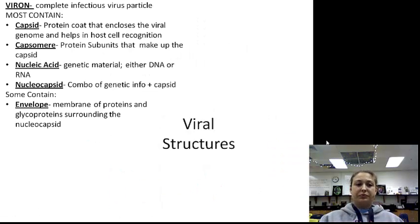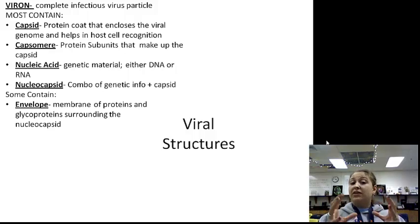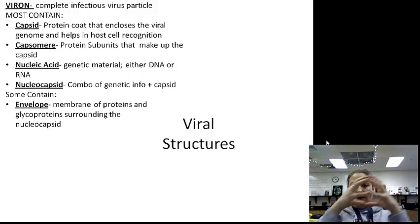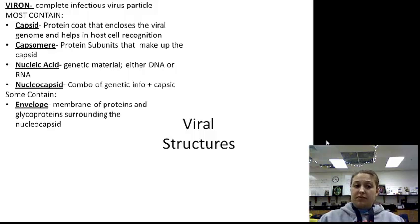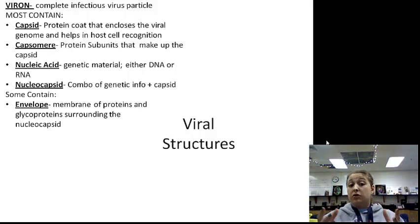Viral structure. Start with the pieces. The virion is the complete infectious particle — it's the whole package. Next, we have the capsid, which is the protein coat that encloses the genome, the DNA or RNA.